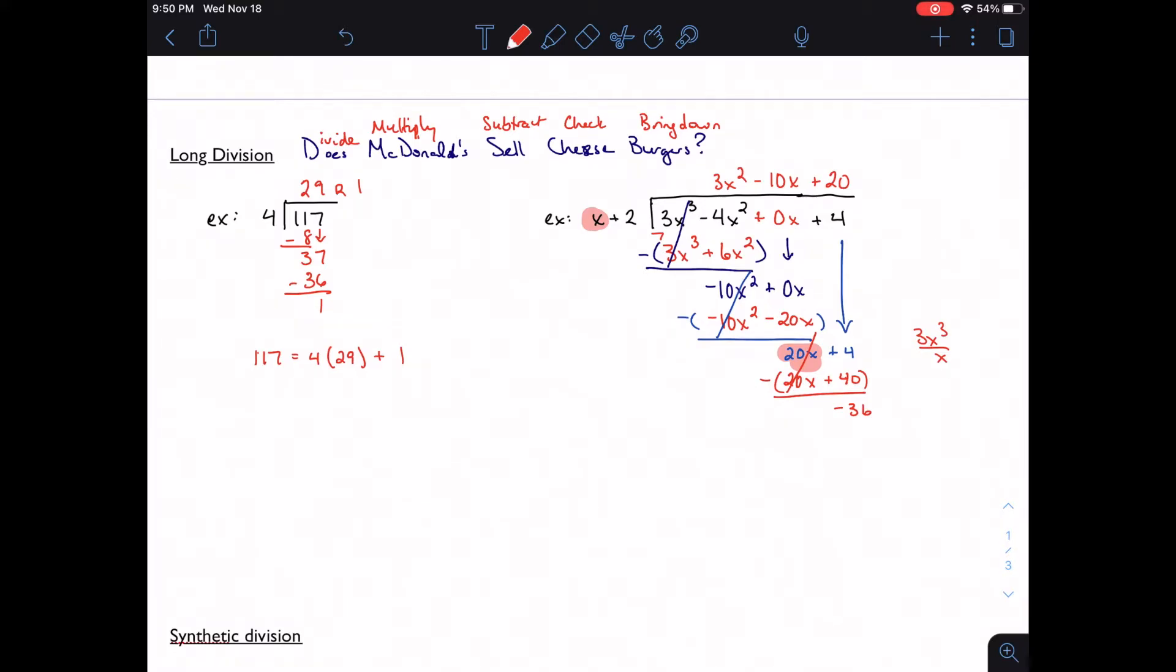If you remember back to our numerical example, another way that you learned how to write the remainder is to write it as a fraction over the thing you're dividing by. We can do the same thing with polynomials. I can take my remainder and write it as a fraction over the thing I'm dividing by. So I have negative 36 over x plus 2. And now here is my entire final answer.